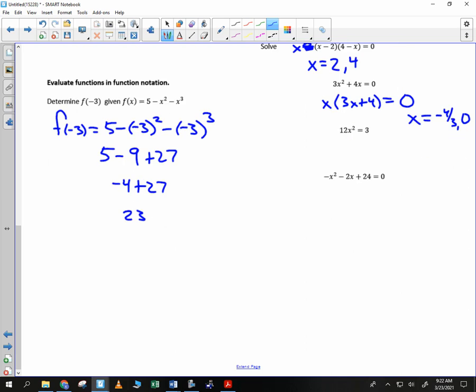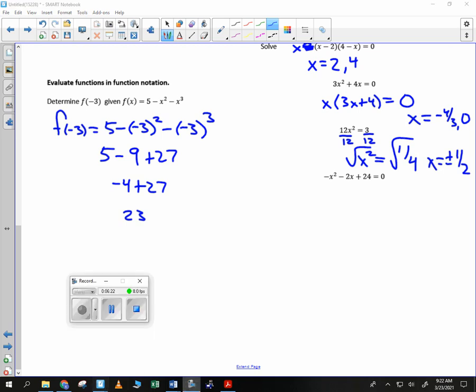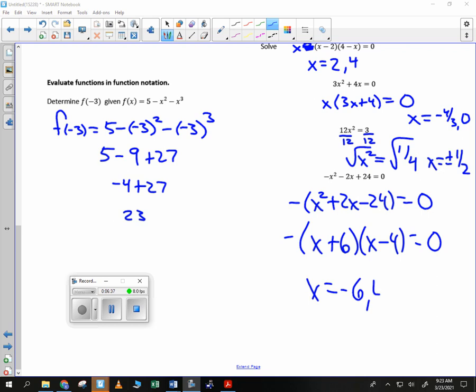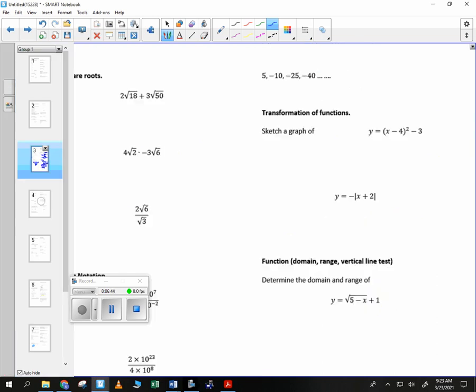Okay, so sometimes you don't need to factor 12x squared is equal to 3. We can simply divide by 12. And we get a 4th. What is the square root of a 4th? Square root of the top, square root of the bottom. Plus or minus 1 half? Again, we have two solutions. Do the last one on your own. Good morning. I have negative 6 and positive 4. We good? All right. Good review of the heart of algebra.